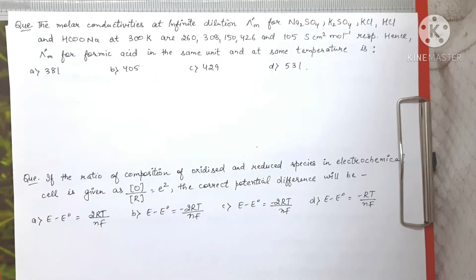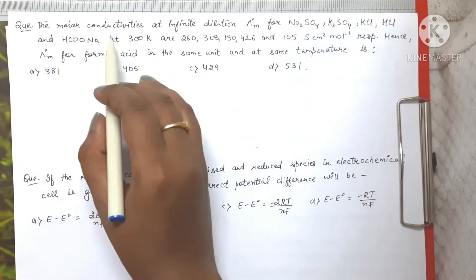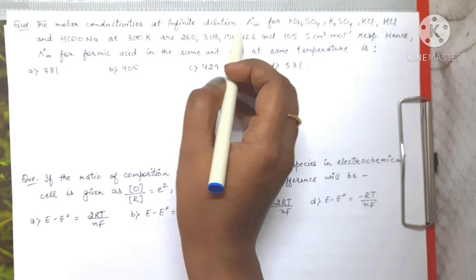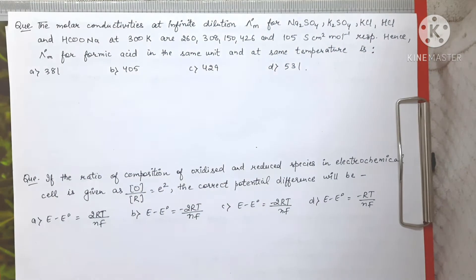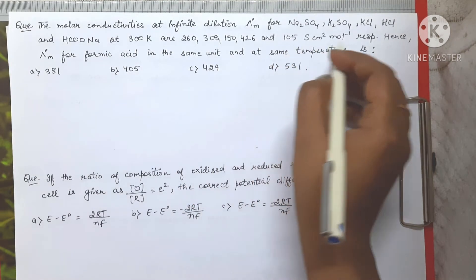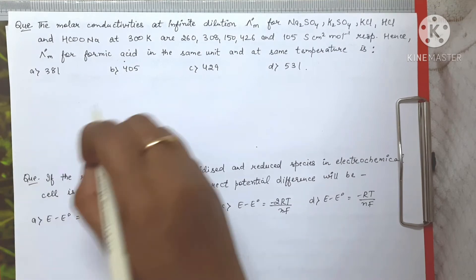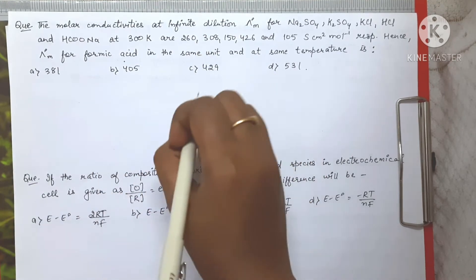Hi everyone, welcome to Netgate Chemistry. Today we are going to discuss some previous year questions of electrochemistry which are asked in the CSIR NET exams. The first question says that the molar conductivities at infinite dilution, λ°m, for Na₂SO₄, K₂SO₄, KCl, HCl, and HCOONa at 300 K are given respectively. We have to find λ°m for formic acid.